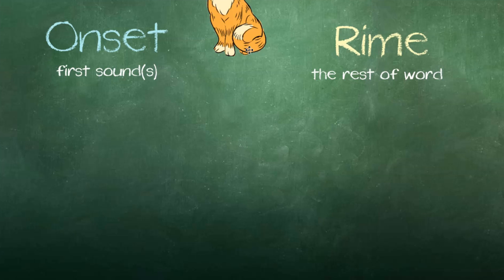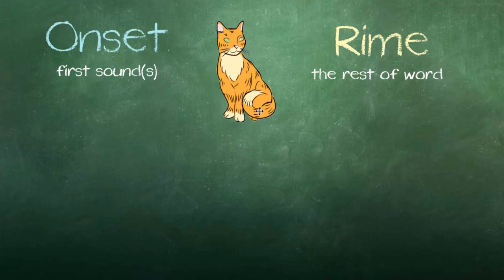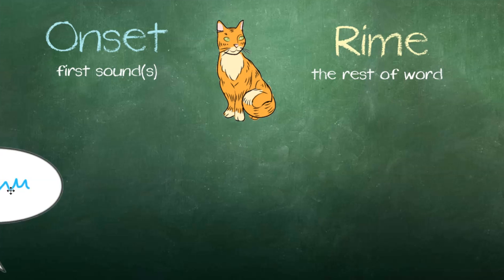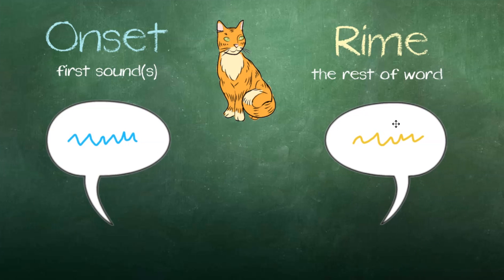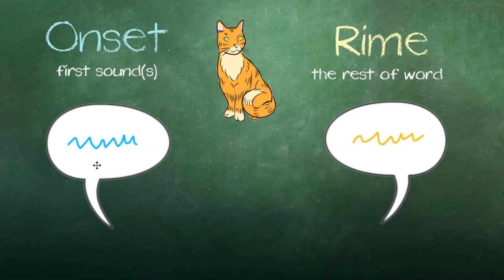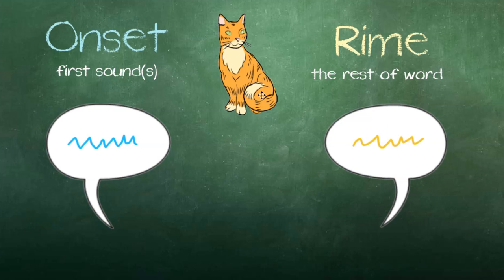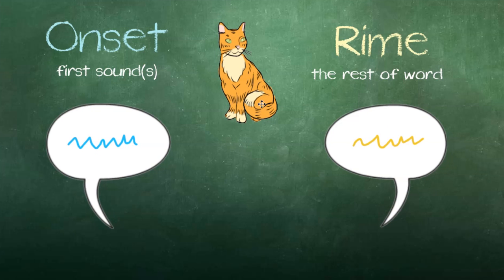Let's look at the word cat. The onset of cat is 'ck'. The rhyme of cat is 'at'. Ck. At. Cat.